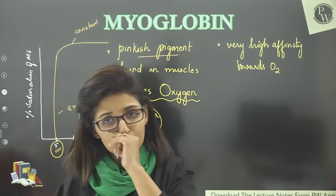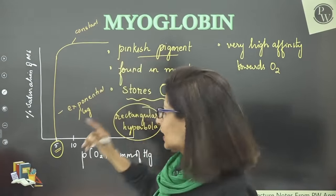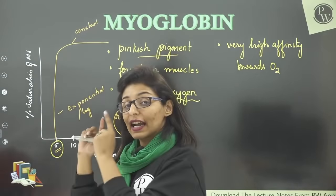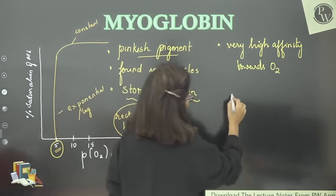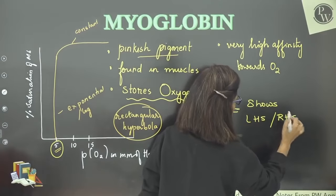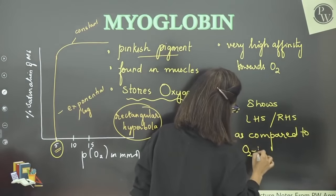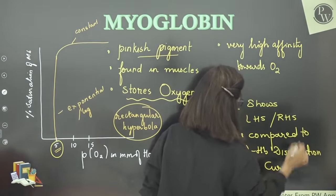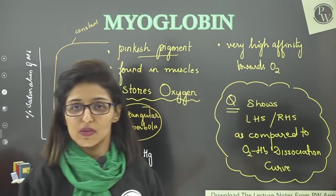So myoglobin is a pinkish pigment in muscles that stores oxygen with very high affinity — it can bind at a pressure of even 5 mm of mercury. If we compare this curve with hemoglobin's oxygen dissociation curve, does myoglobin's curve show a right-hand shift or a left-hand shift? Answer in the comment section. Also tell me how well you understood yesterday's topic, mechanism of muscle contraction.